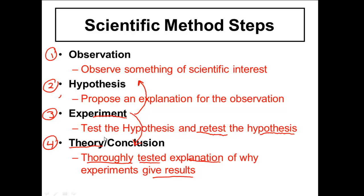That conclusion becomes our theory. In science, a theory is a thoroughly tested explanation for why experiments give certain results. One important disclaimer: any theory can technically be disproved or improved, and that's not the end of the line — it gives us another reason to keep working. So the scientific method is: make an observation, form a hypothesis, test that hypothesis with an experiment, and ultimately arrive at a theory or conclusion.